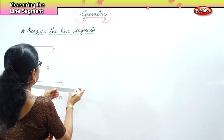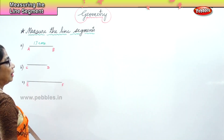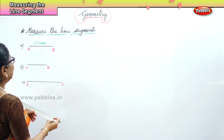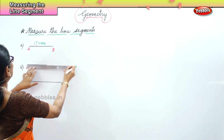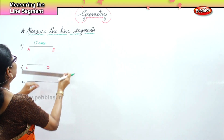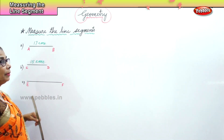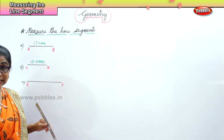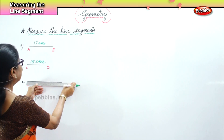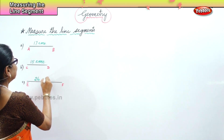It ends at seventeen, so this is seventeen centimeters. That line is seventeen centimeters. Now we take the line segment C, put the zero over there — where does it end? It ends at fifteen, so this is fifteen centimeters. And then finally we have line segment E-F. You put the zero on E and then we see where the point ends. That is twenty-six, so this is twenty-six centimeters.